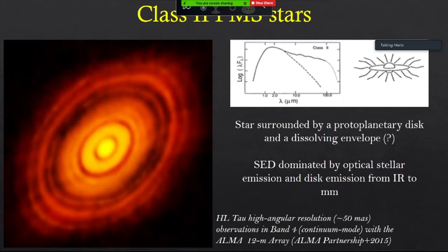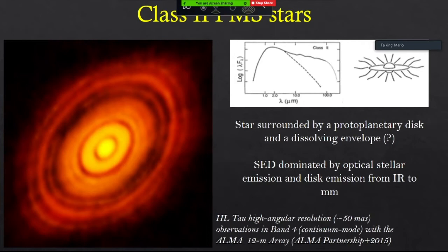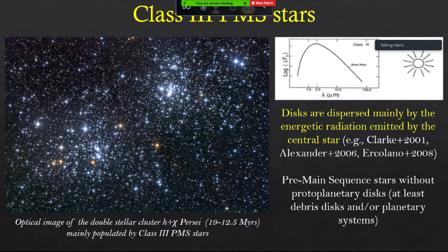Then we have the Class 2 objects, in which the envelope is completely or almost gone and we have only the central star and a nebula of gas and dust with a disk shape — the circumstellar disk orbiting around the star. This is another wonderful image produced by ALMA in which the central star is somewhere here and you can appreciate the structure of the protoplanetary disk. The size of this disk is about 100 to 200 astronomical units, varying a lot from system to system. The spectral energy distribution of these sources is dominated by the optical stellar emission and then the disk emission from infrared to the millimeter.